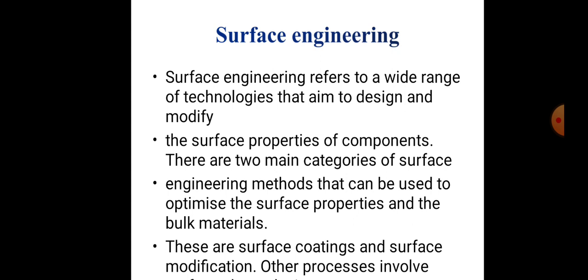Surface engineering refers to a wide range of technologies aimed to design and modify the surface properties of components. There are two main categories of surface engineering methods that can be used to optimize the surface property and the bulk materials: surface coating and surface modification. Other processes are also involved.